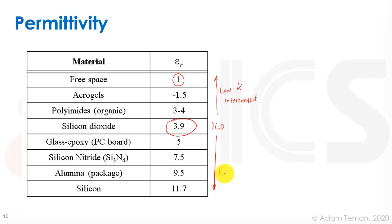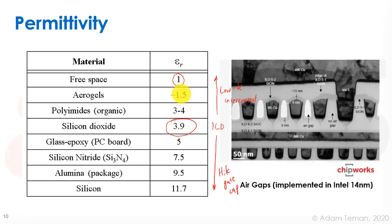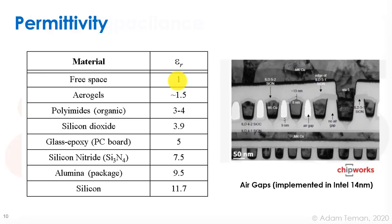Remember that for gate capacitance we want high-K materials, but for interconnect we're going the exact opposite direction with low-K — try not to get confused. Low-K materials have been introduced to VLSI processes since about 90 nanometers and are commonly used today, pushing permittivity as low as possible to reduce capacitive coupling. Already at Intel's 14 nm process, they implemented air gaps sitting in the interlayer dielectrics, giving a real permittivity close to 1 — something done in important parts of chips nowadays.